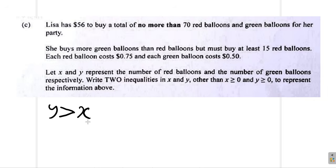They say she must buy at least 15 red balloons. At least 15 red. Red is what? X. So you can say that X is greater than or equal to 15. X is the number of red balloons. She must buy at least 15 red balloons. That means 15 or more red balloons.